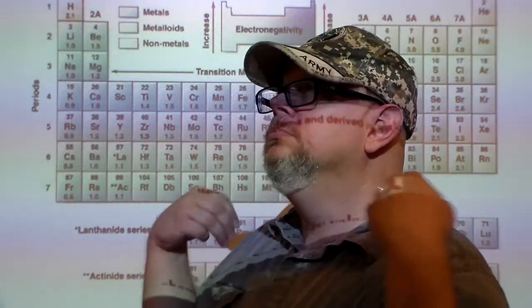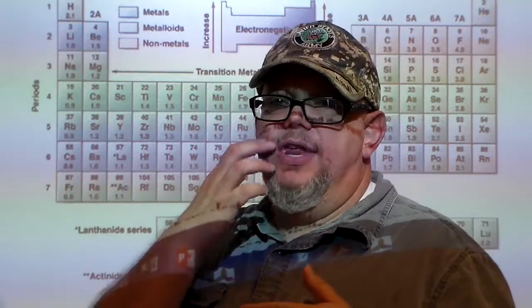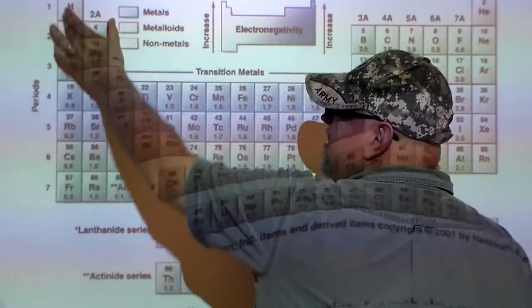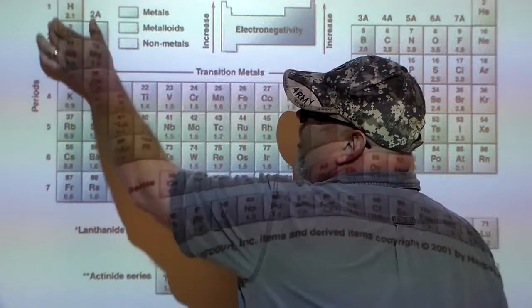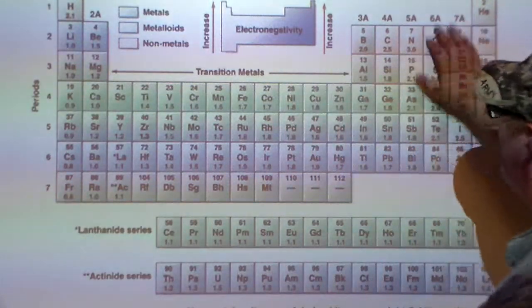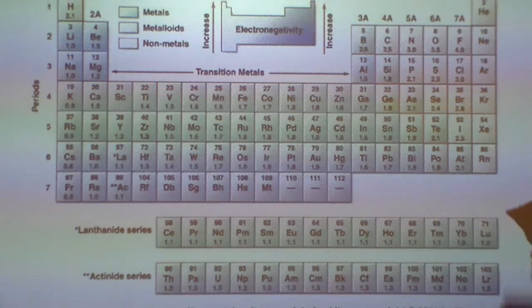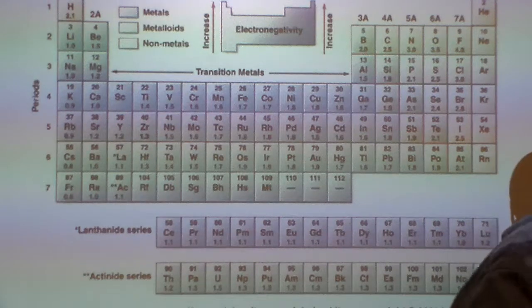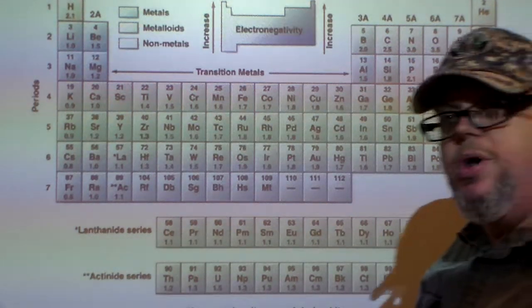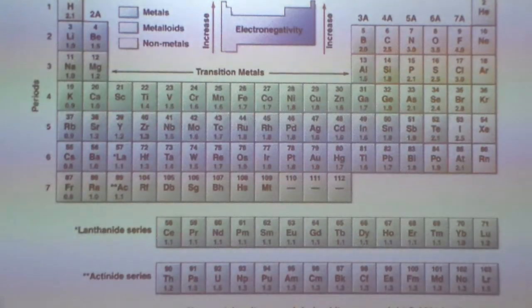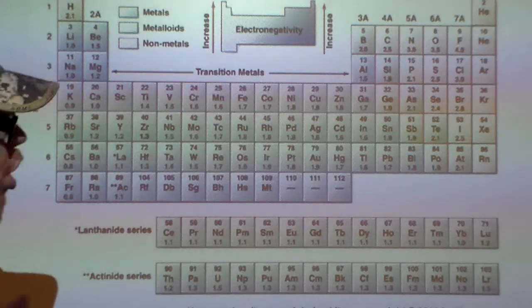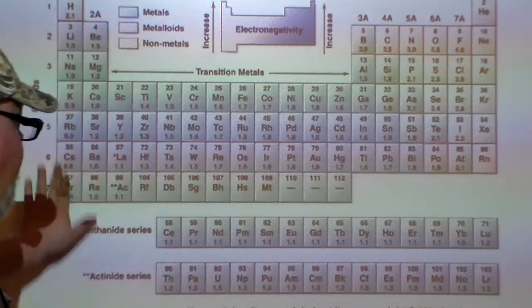So we can see these low-electronegativity atoms don't care much about electrons, the high-electronegativity atoms really like electrons, and the noble gases don't care at all. With this information, we're able to predict what kind of bond two atoms are going to have.